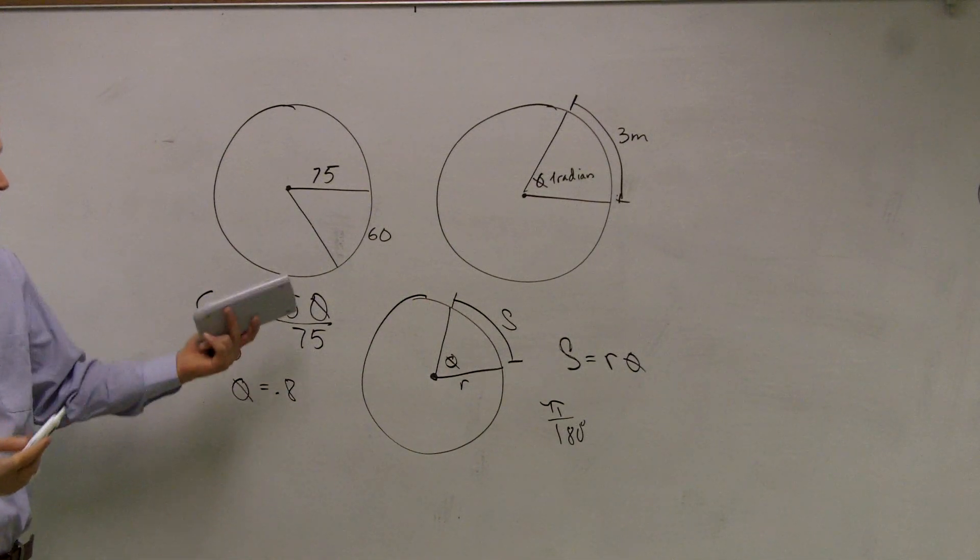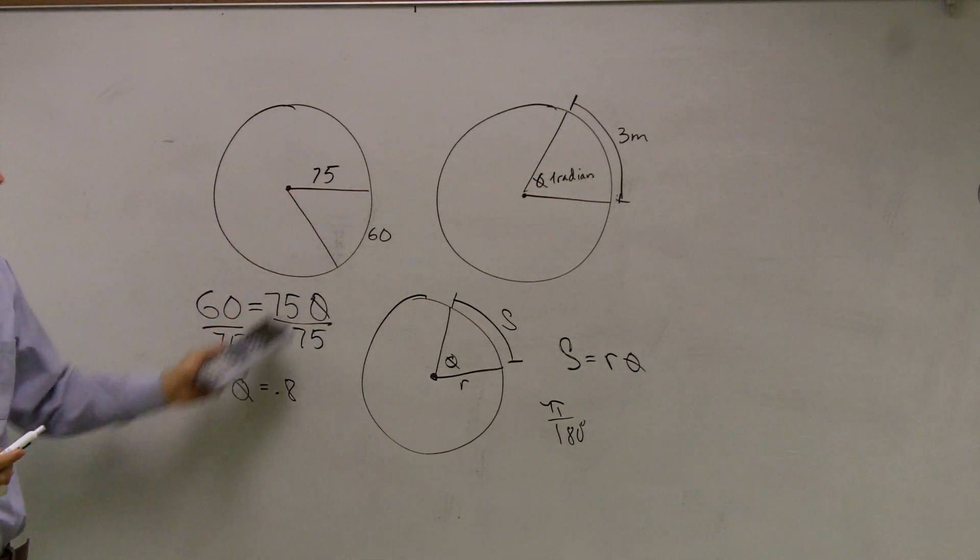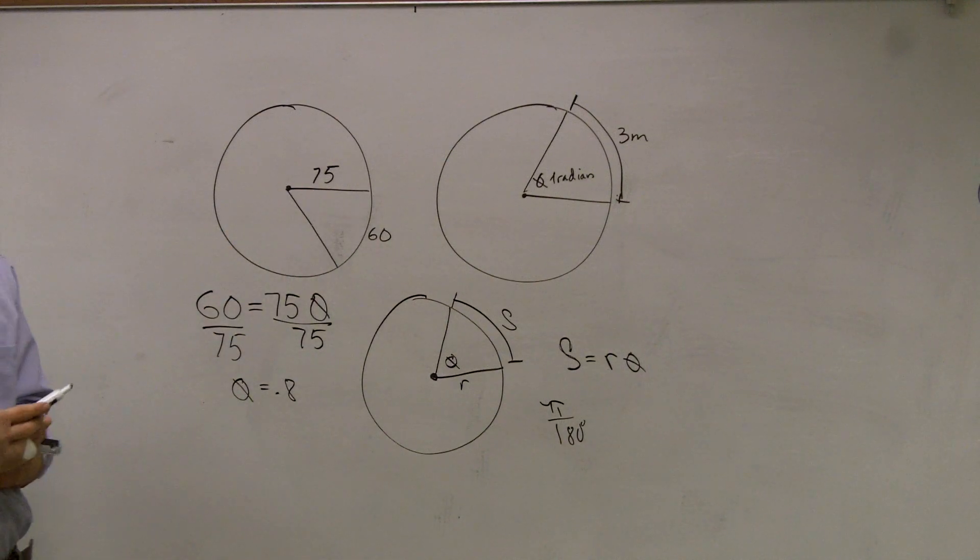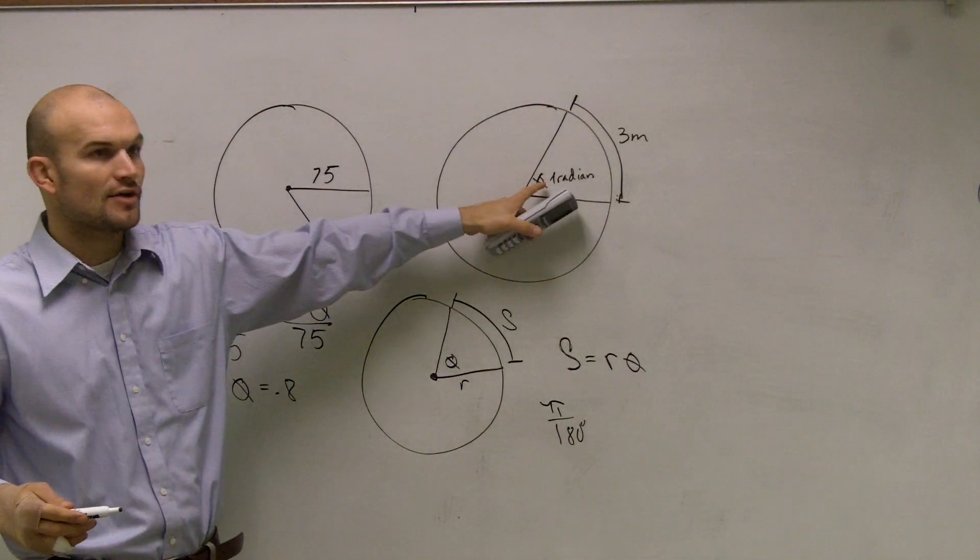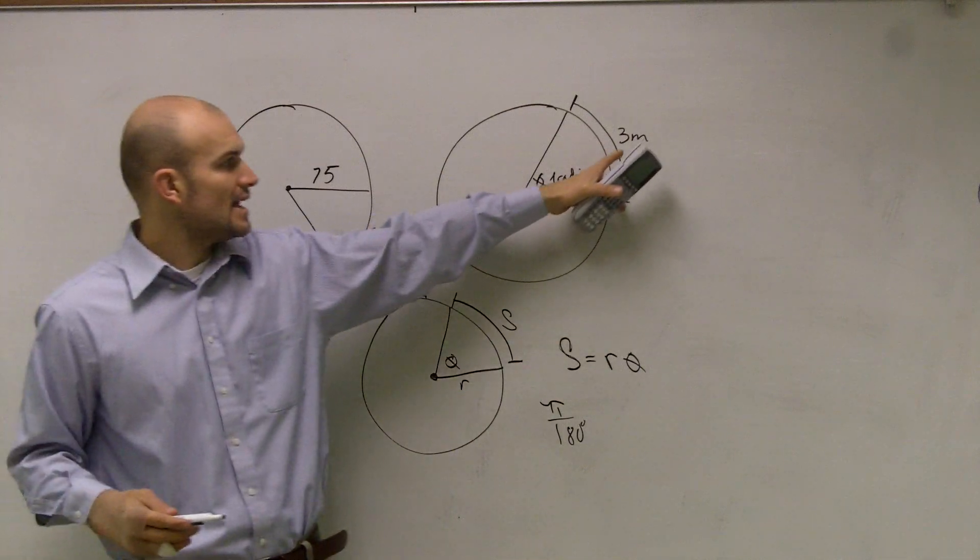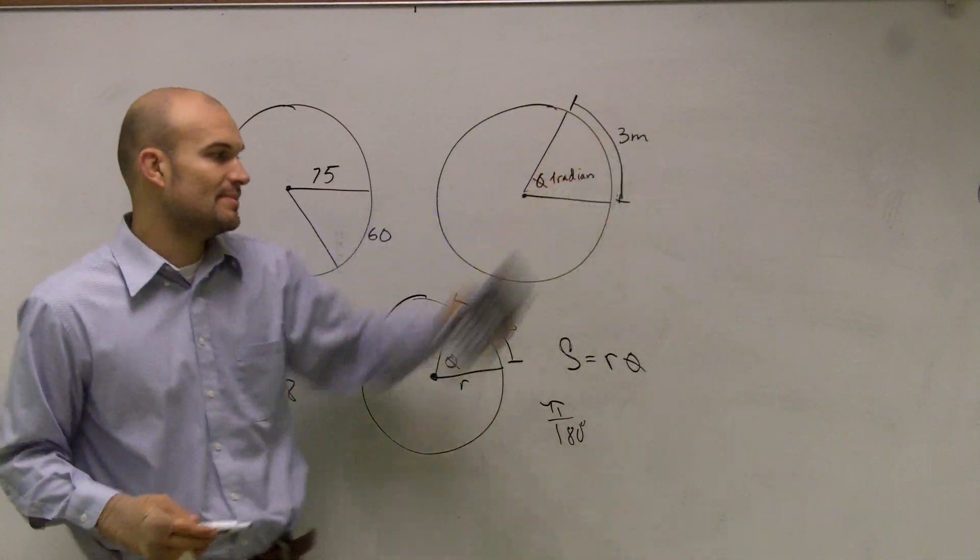And obviously you could say that's in the negative direction, but the measurement of theta is 0.8. Over here, we're given our theta, which is 1, and we're given the arc length, which is 3 meters.